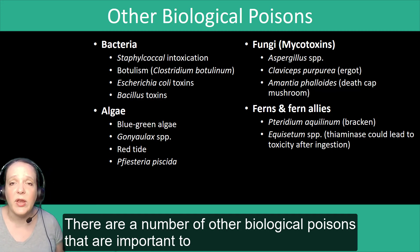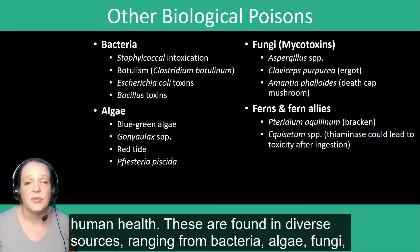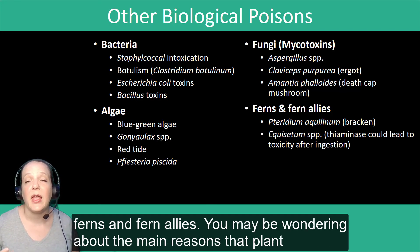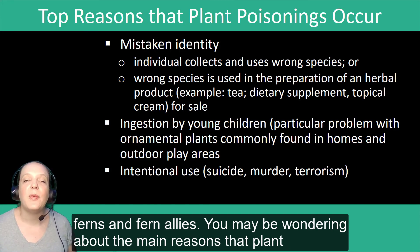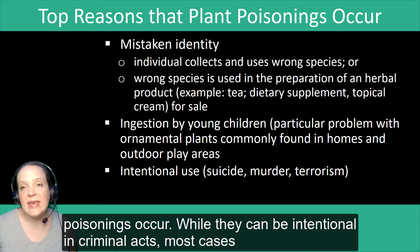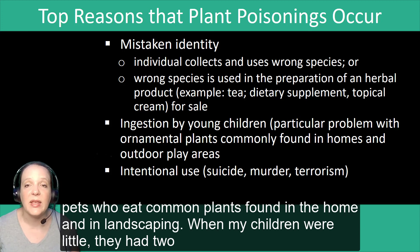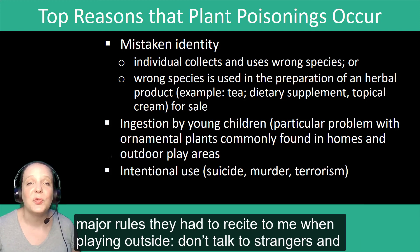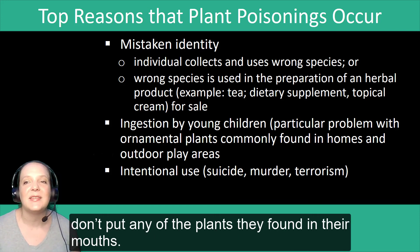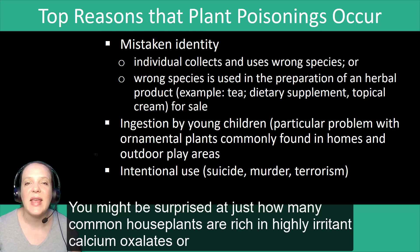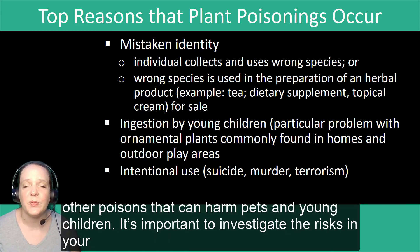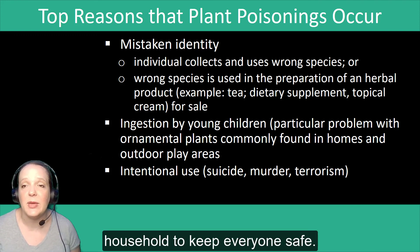There are also a number of other biological poisons important to human health, found in diverse sources ranging from bacteria, algae, fungi, ferns, and fern allies. You may be wondering about the main reasons that plant poisonings occur. While they can be intentional and criminal acts, most cases are actually due to mistaken identity when people forage wild ingredients, or from children and pets who eat common plants found in the home and landscaping. It's important to investigate the risks in your own household to keep everyone safe.